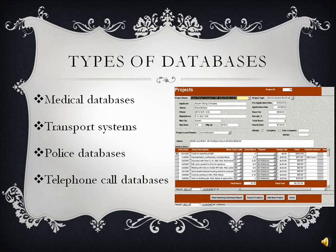The fourth type of database is telephone call databases. This allows the government to monitor different calls to any types of people who could be alleged in terrorist activities, or monitor anybody for that matter.